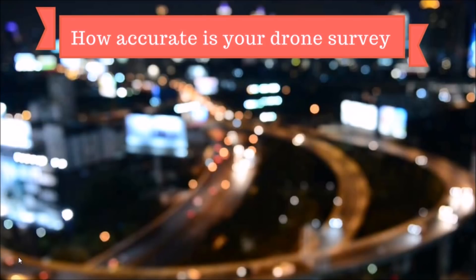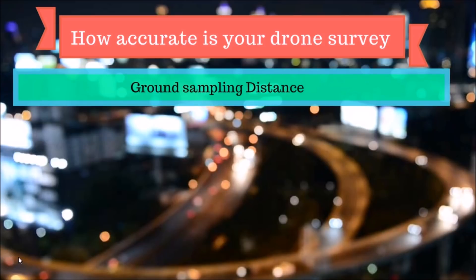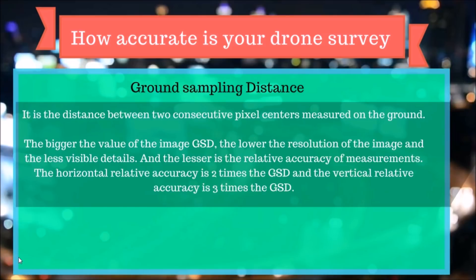One of the main factors that determines accuracy is ground sampling distance, or GSD. Ground sampling distance is the distance between two consecutive pixel centers measured on the ground. The bigger the value of the image GSD, the lower the resolution of the image and the less visible the details, which also reduces the relative accuracy of measurements.